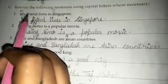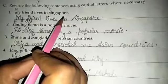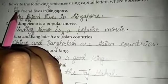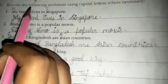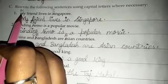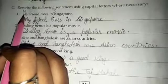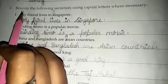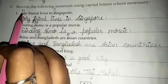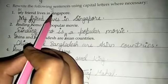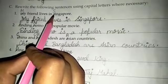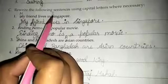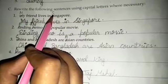Number 1: My friend lives in Singapore. You can see in this sentence — a sentence always begins with a capital letter, but here it is not beginning with a capital letter. So first you have to correct this. The first letter will begin with a capital letter. M will be capital and S will be capital because Singapore is a proper noun — a name of a place.